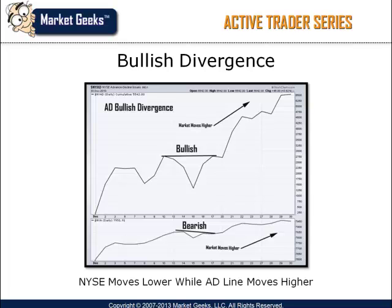Oftentimes, there is divergence between the AD line and the index, which is a good indication that a short-term correction is approaching. Notice how the NYSE is beginning to decline while the AD line is still continuing to move upwards at a slight angle. The stock market continues moving higher after the bullish divergence occurs.